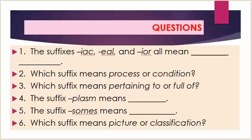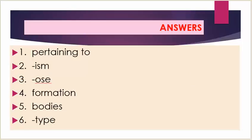Number one: the suffixes -eac, -eel, and -ear all mean blank blank. Number two: which suffix means process or condition? Number three: which suffix means pertaining to or full of? Number four: the suffix -plasm means blank. Number five: the suffix -somes means blank. Number six: which suffix means picture or classification? Answers. Number one means pertaining to. Number two: -ism. Number three: -ous. Number four: formation. Number five: bodies. Number six: type.